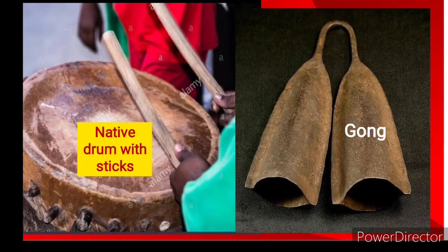Next we have the native drums with sticks. These drums are made especially with wood — not metal — and have sticks at the top edges, and they are made of animal skin.